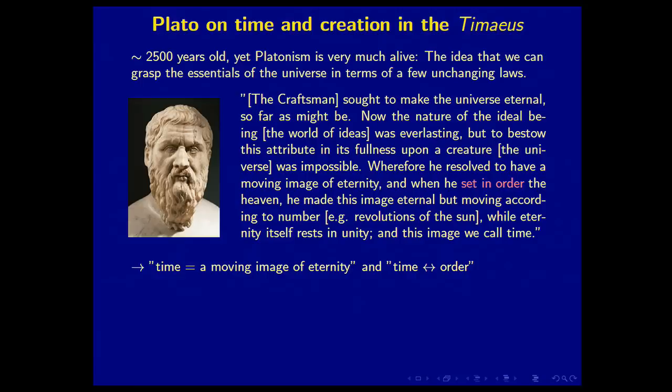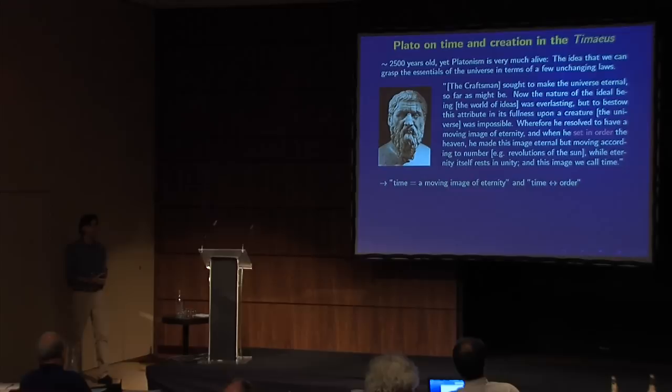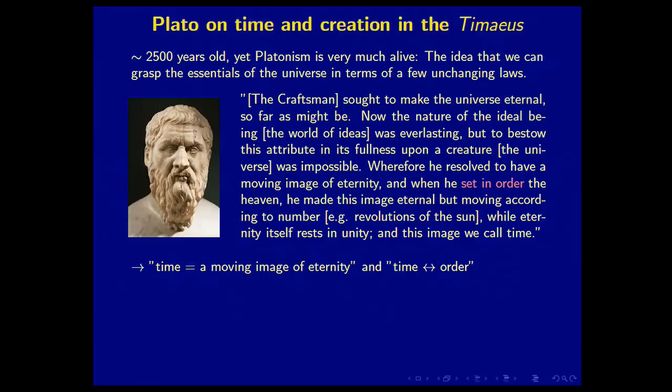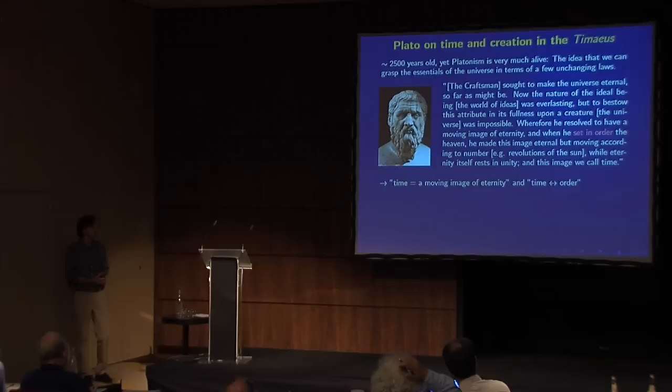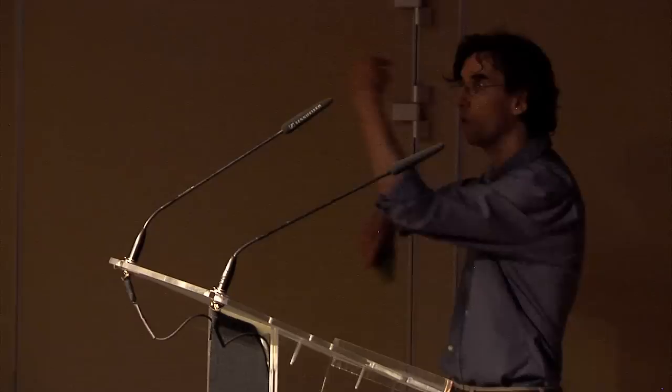It's in the Timaeus. The craftsman sought to make the universe eternal so far as might be. Now, the nature of the ideal being was everlasting, but to bestow this attribute in its fullness upon a creature was impossible. Wherefore, he resolved to have a moving image of eternity. And when he set in order the heaven, he made this image eternal, but moving according to number, which is roughly revolutions of the sun or the planets, while eternity itself rests in unity. And this image of eternity we call time. So eternity rests in unity in the one, and then time is number one, two, three, four, five, six, seven rotations of the sky.